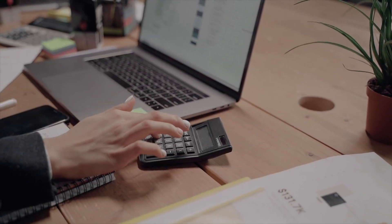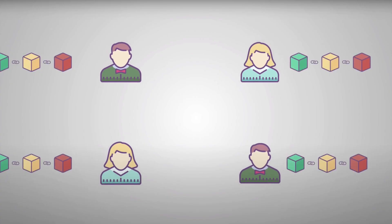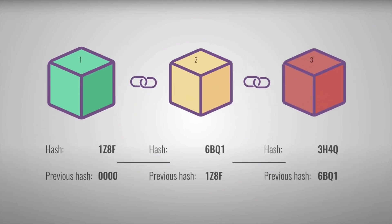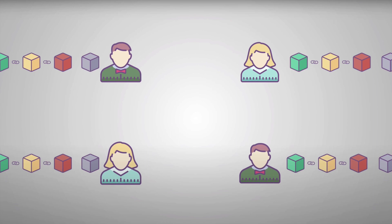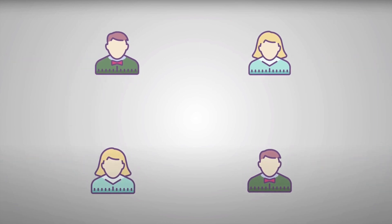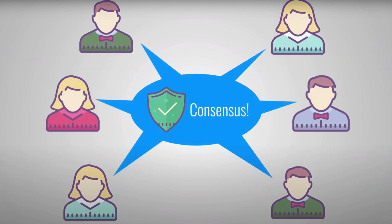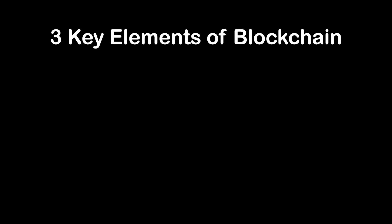A blockchain network can track orders, payments, accounts, production, and much more. Because members share a single view of the truth, you can see all details of a transaction end to end, giving you greater confidence as well as new efficiencies and opportunities.